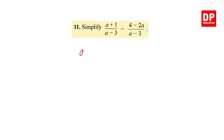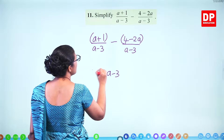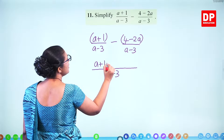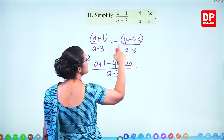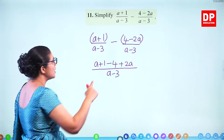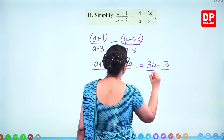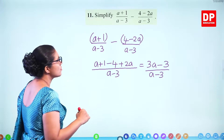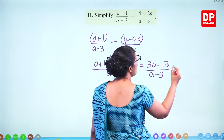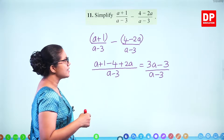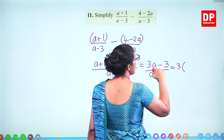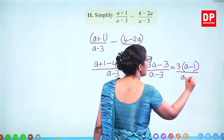Simplify: (A plus 1) over (A minus 3) minus (4 minus 2A) over (A minus 3). Put brackets around the second fraction because of the minus sign. A minus 3 is the common denominator. Expand brackets: A plus 1, then minus 4 and plus 2A — minus minus becomes plus. Add: 2A and A becomes 3A, and minus 4 plus 1 is minus 3. So 3A minus 3 over (A minus 3) — take A out: A(3) minus 3. Factorizing gives 3(A minus 1) over (A minus 3).